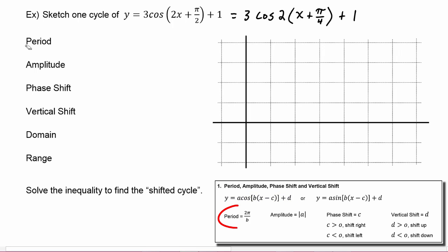The period is found by two pi over b. We know that b is equal to two, so we have two pi over two, which equals pi. This means there will be a horizontal compression — the graph is going twice as fast, and all x-values will be divided by two from the normal cosine graph.